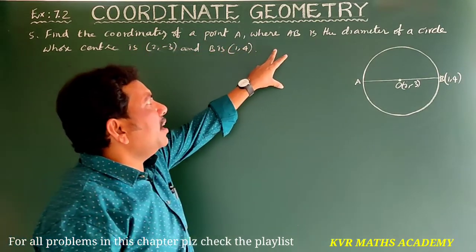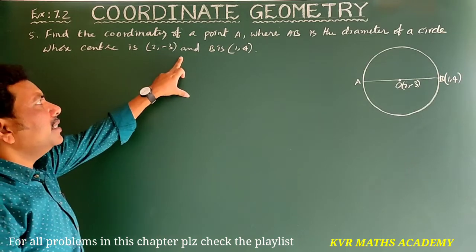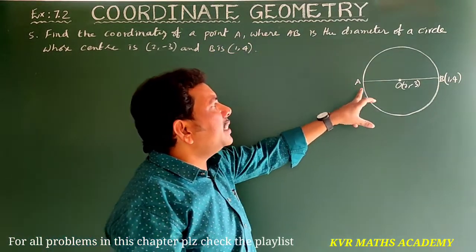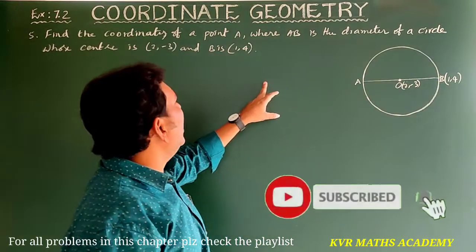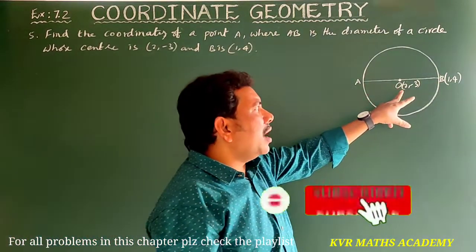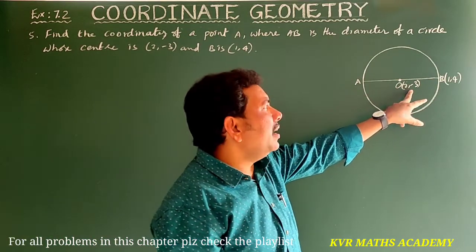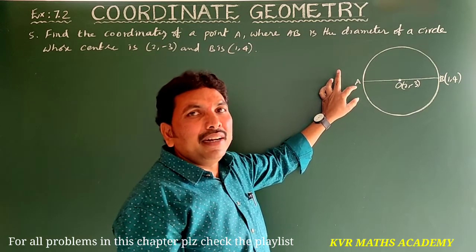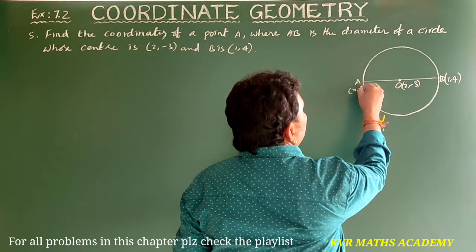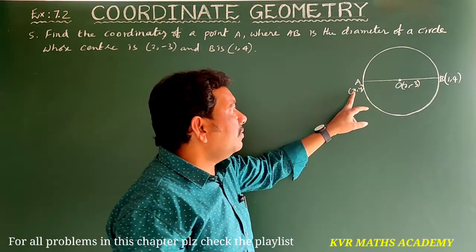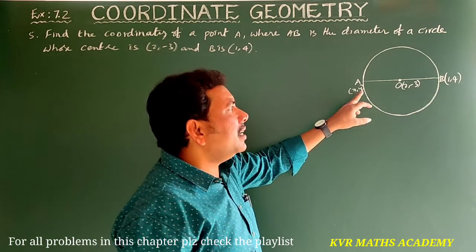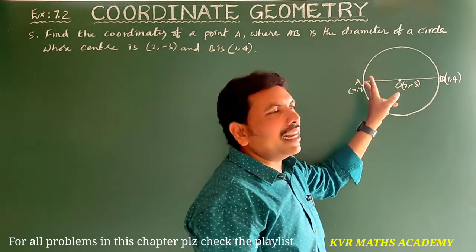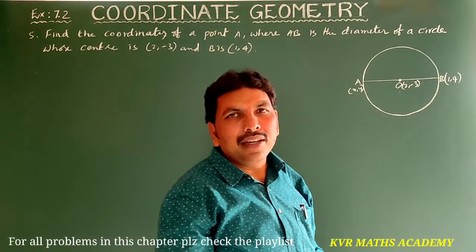Find the coordinates of point A, where AB is the diameter of a circle whose center is (2, −3) and B is (1, 4). AB is the diameter of the circle, center O is (2, −3), and one endpoint B is (1, 4). We need to find the other endpoint A, which we call A(x, y). The center of the circle is the midpoint of the diameter, so we use the midpoint formula.